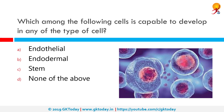Which among the following cells is capable of developing into any type of cell? This cell can change into any different type of cell in its life cycle. The correct answer is stem cells. A stem cell is a cell with the unique ability to develop into specialized cell types in the body. In the future, they may be used to replace cells and tissues that have been damaged or lost due to disease.